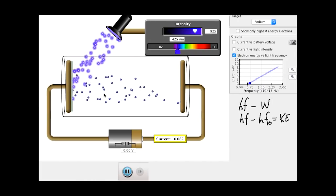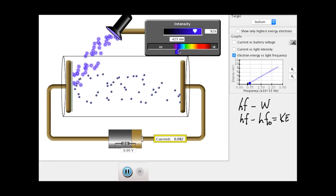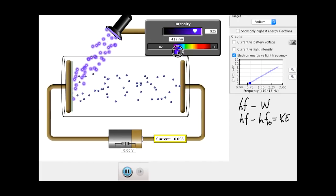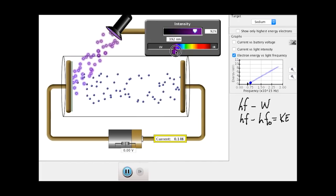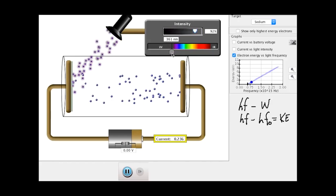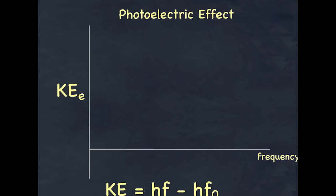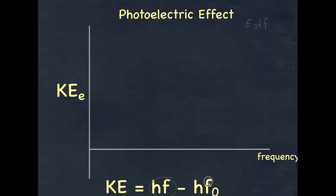The only thing that contributes to the energy of the electrons is the frequency of the photons used. So in summary, we've talked about how an electron is released because the photon's energy equals hf. That is the photon's energy. And the minimum energy required for the electron to be released is referred to as the work function.